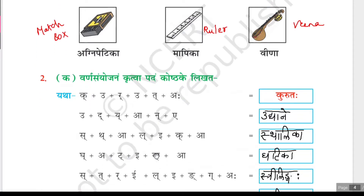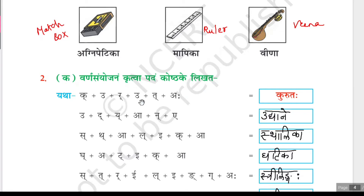Now we will see the next question: Varna samyojanam krithwa padam koshtake likhata. We have to join the letters and write those words in the box. Model example: ikk plus o plus iri plus o plus ith plus aha gives kurutaha. Ikk plus o is ku, iri plus o is ru, ith plus aha is taha, so kurutaha.